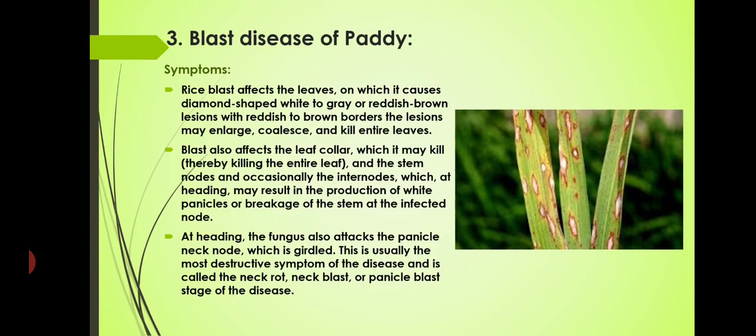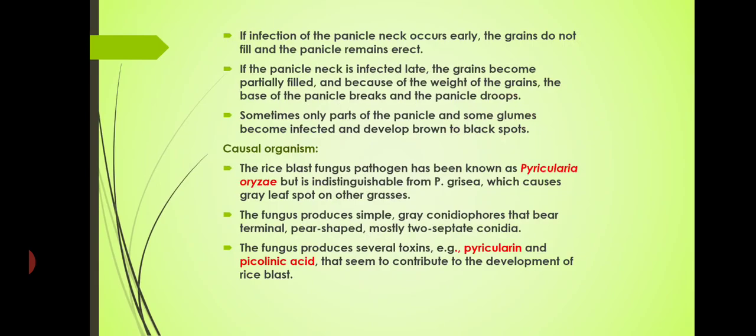This is called neck rot, neck blast or panicle blast stage of the disease. If infection of the panicle neck occurs early, the grains do not fill and the panicle remains erect — normally when seeds are ready the panicle bends due to their weight; if seeds are empty (padiru in Malayalam), the panicle is erect. If the panicle neck is infected late, the grains become partially filled and the base of the panicle breaks and the panicle droops.